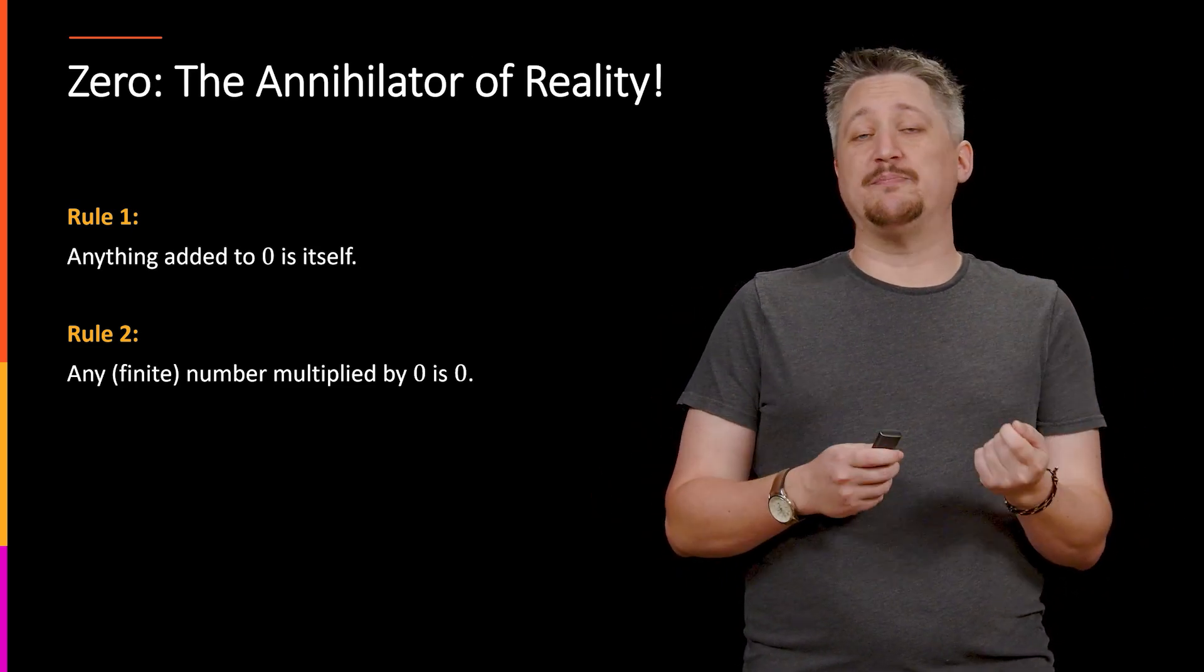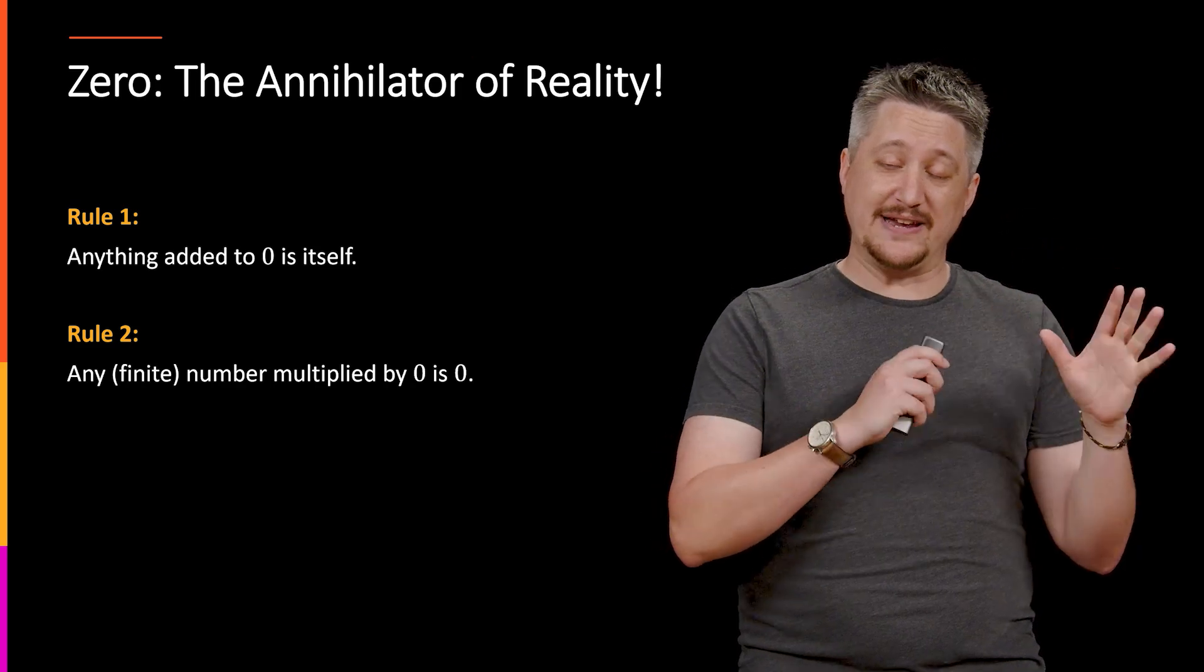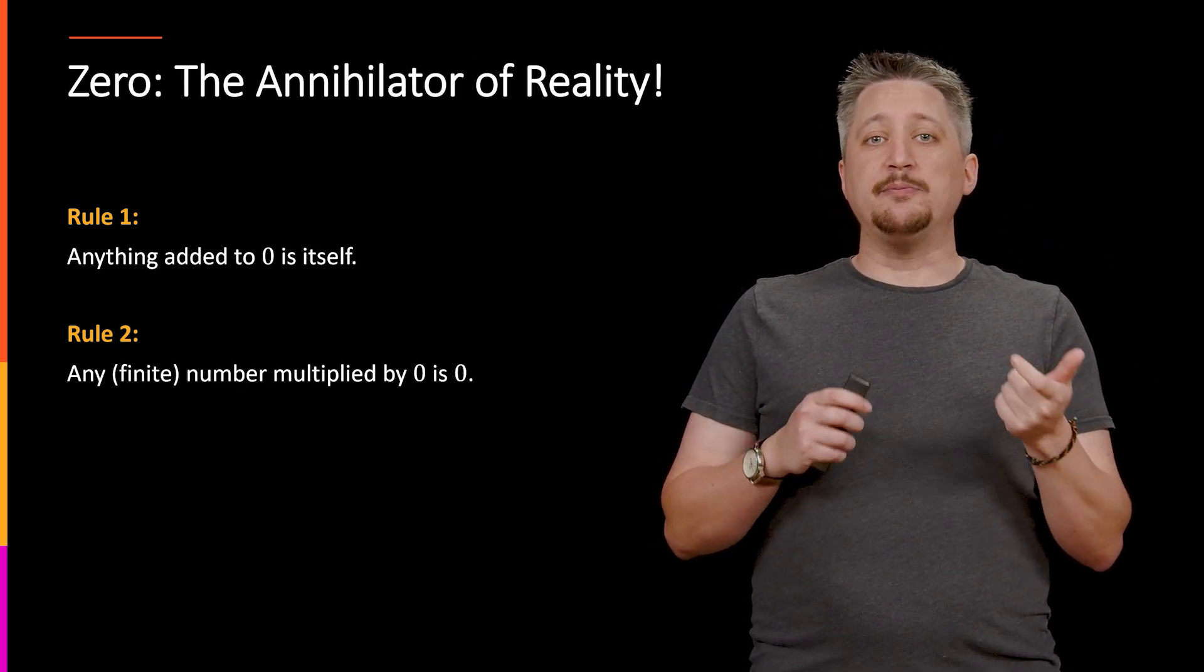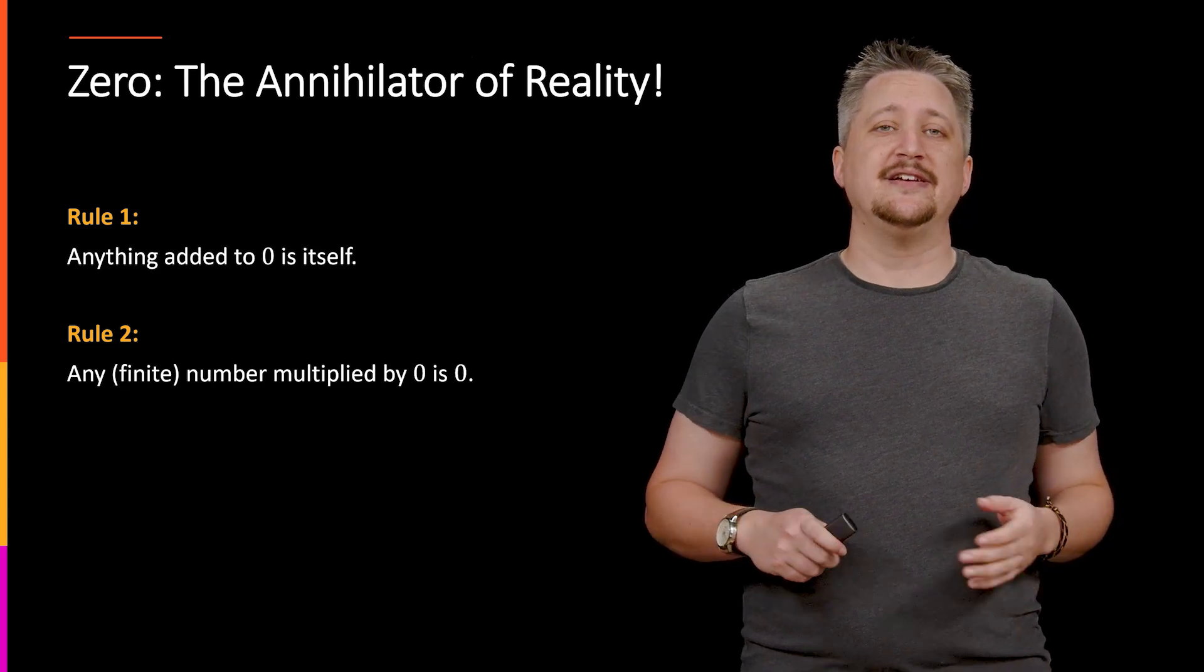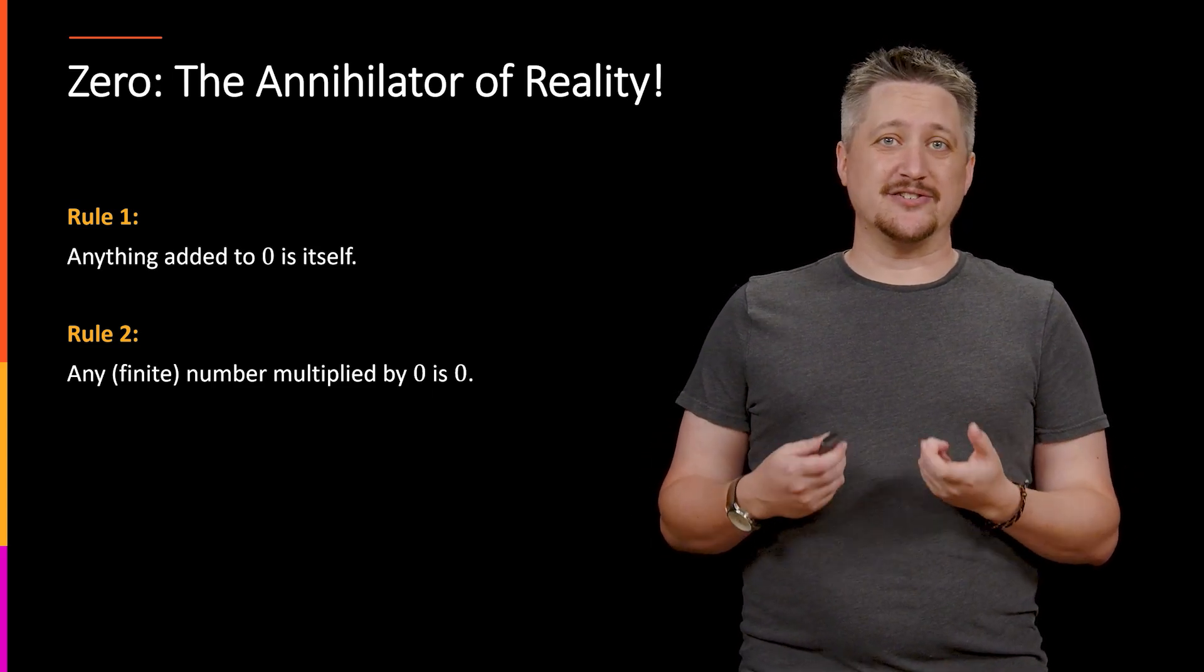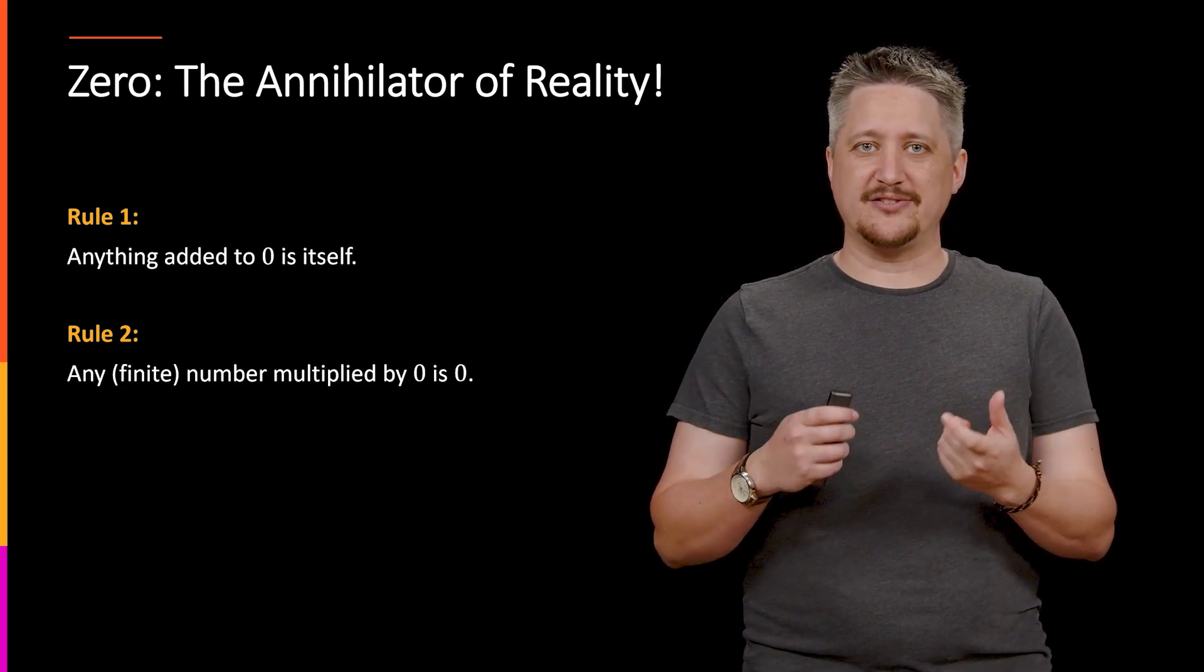But when we multiply by 0, again, ignoring infinity as a weird thing, multiply by 0, it kills it, makes it 0 no matter what it is. So that's why we call it the annihilator - because it annihilates with this product.